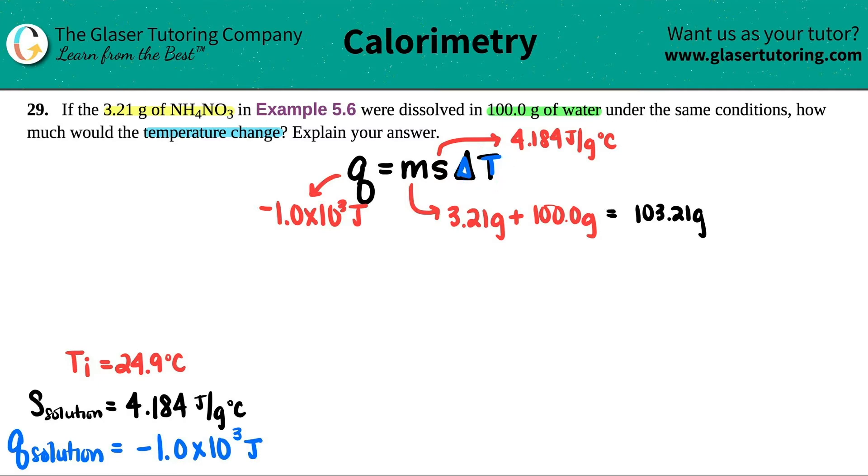So let's go for it. Negative 1.0 times 10 to the third equals 103.21 times 4.184. And then solve for X. Maybe I'll just say that this is going to be my X for now.